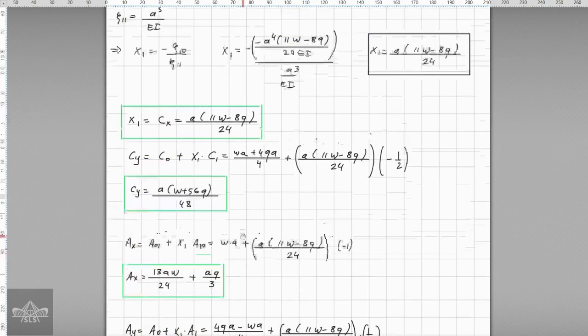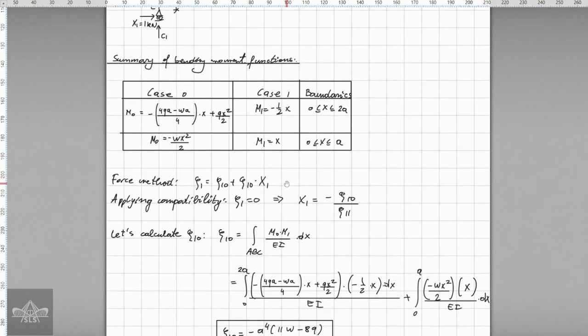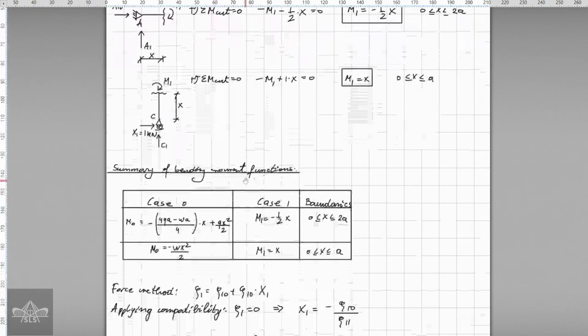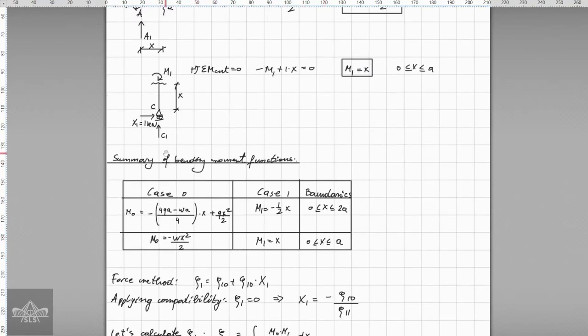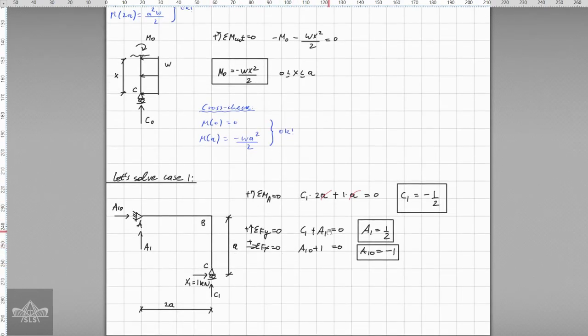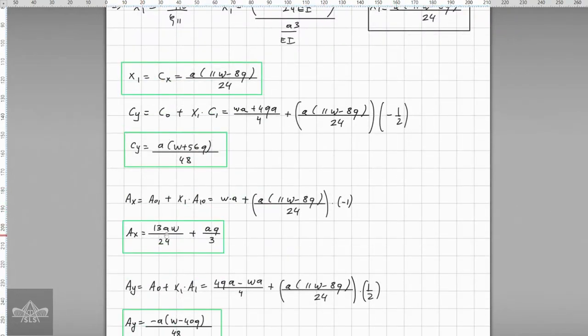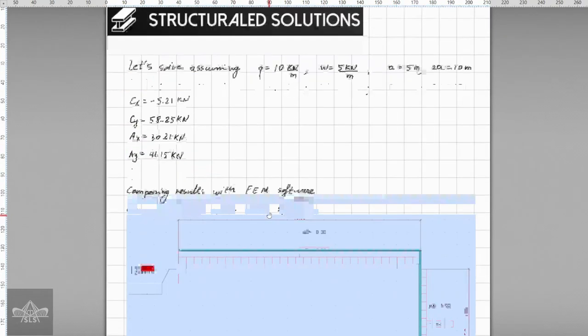The same thing applies for the other reaction which is Ax and Ay. You just have to be careful with the signs. That's why I always like to summarize these results, but a good rule of thumb might be to summarize also the results of these reactions because you might need them later.